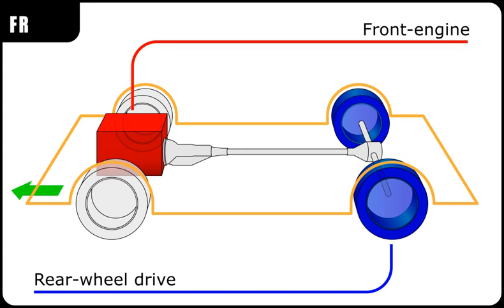Rear-engine, rear-wheel drive. The rear-engine, rear-wheel drive layout, abbreviated as RR layout, places both the engine and drive wheels at the rear of the vehicle. In contrast to the MR layout, the center of mass of the engine is between the rear axle and the rear bumper. Although very common in transit buses and coaches due to the elimination of the drive shaft with low-floor buses, this layout has become increasingly rare in passenger cars. The Porsche 911 is notable for its continuous use of the RR layout since 1963.